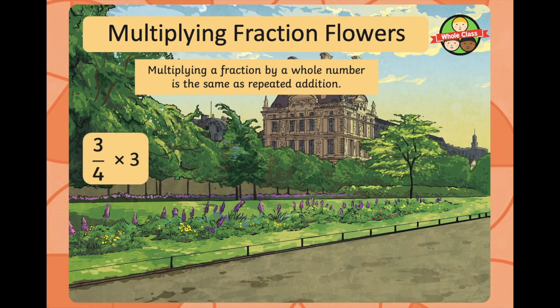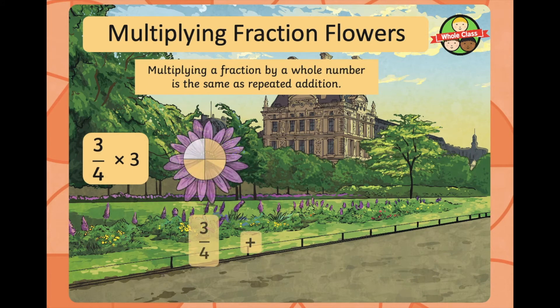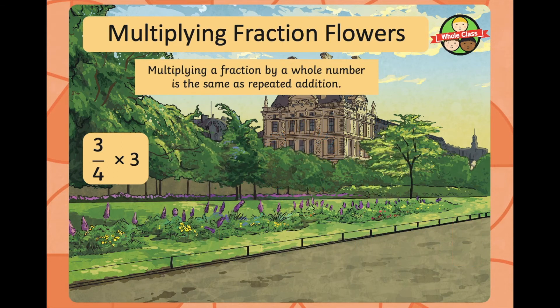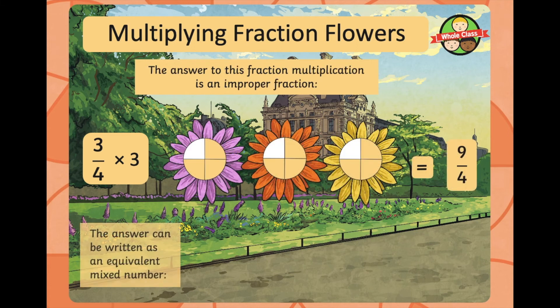This next one is three quarters times three. So, it's three quarters add three quarters add three quarters. Three lots of three quarters, which is nine quarters. The answer to this fraction multiplication is an improper fraction. The answer can be written as an equivalent mixed number.